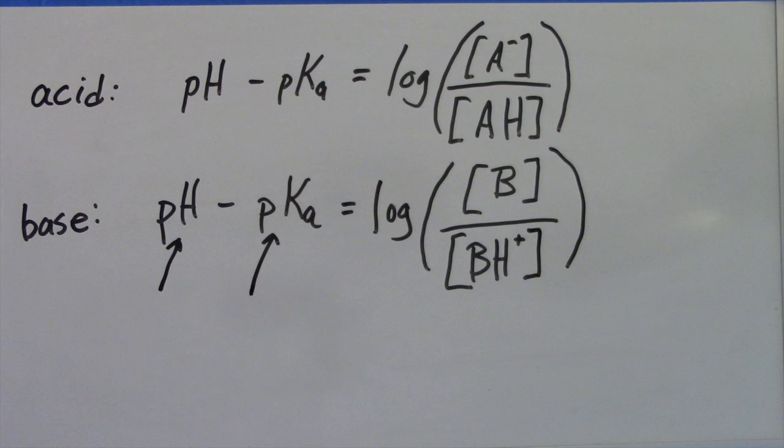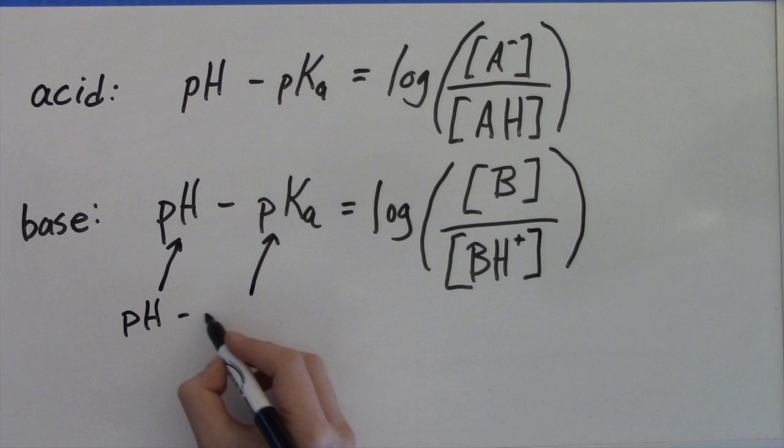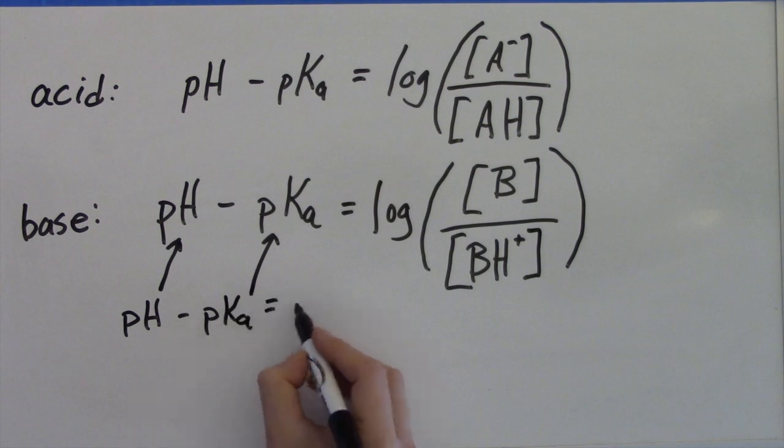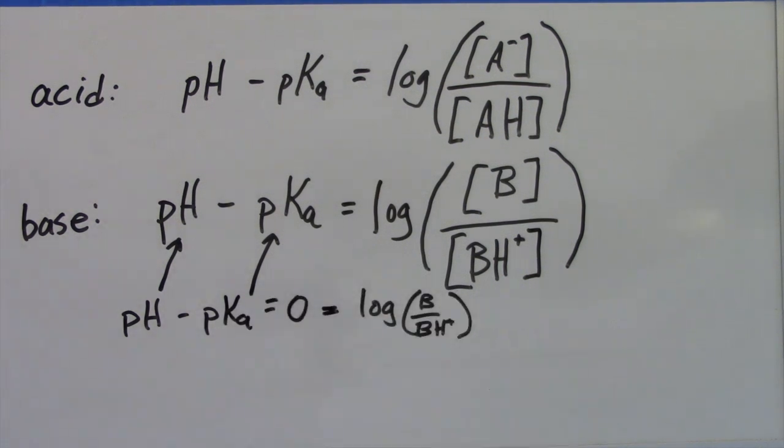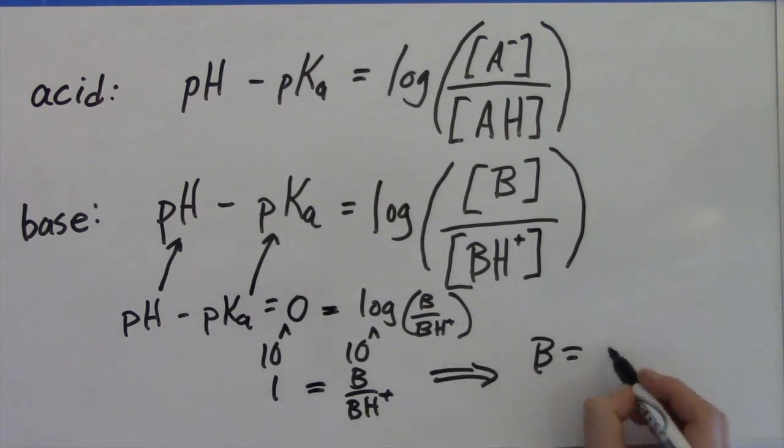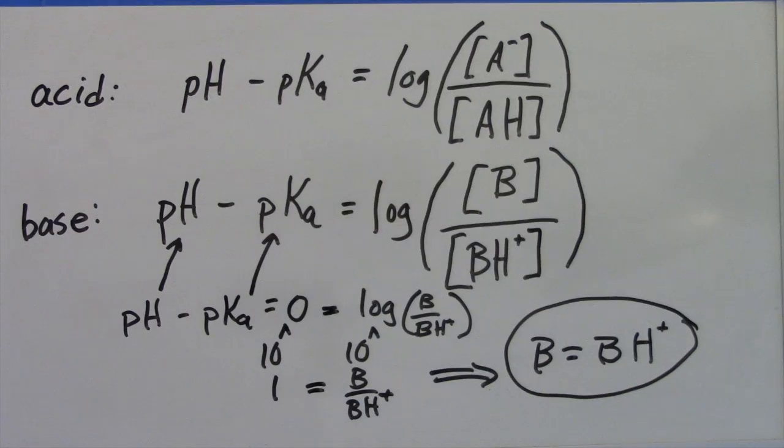Here's the math to show it. If pH equals pKa, the left side of the equation is zero. Now take the anti-log of both sides, that is, raise 10 to the power of those things, and you see that 1 is equal to B over BH-plus, and now you see that B equals BH-plus, or ionized equals unionized.